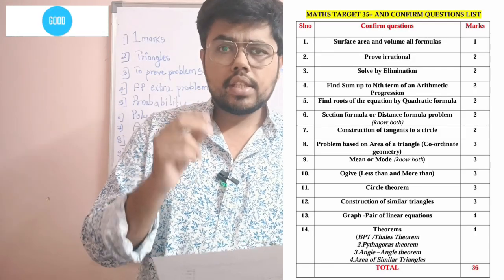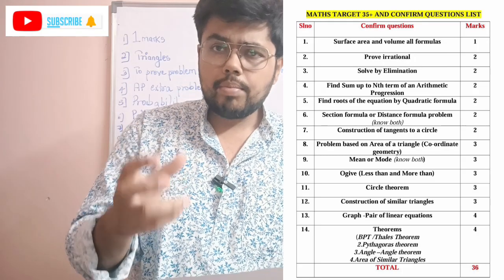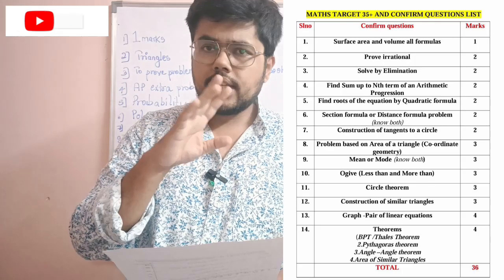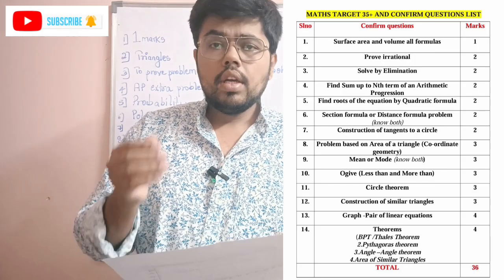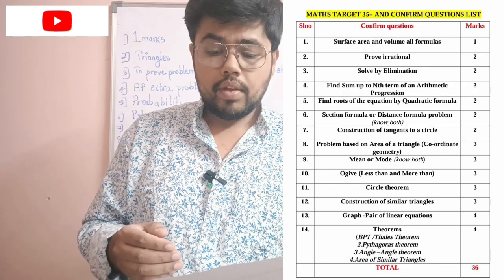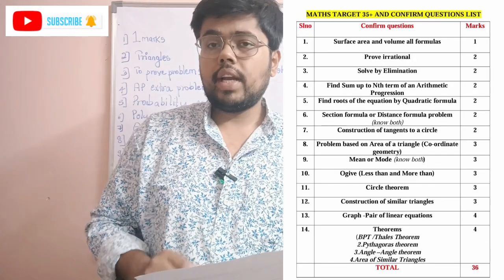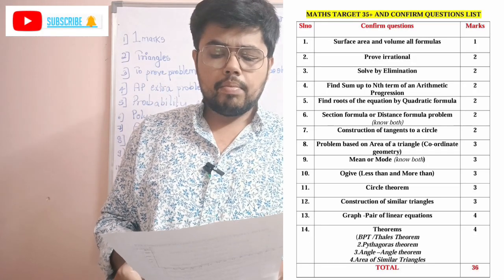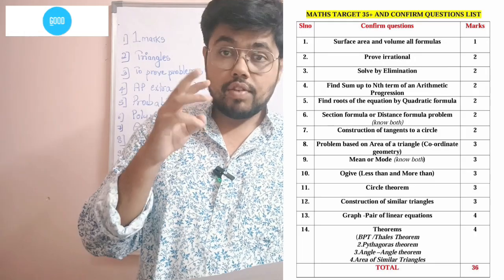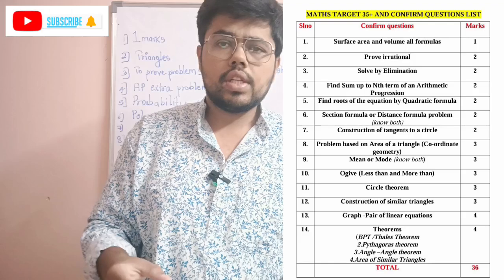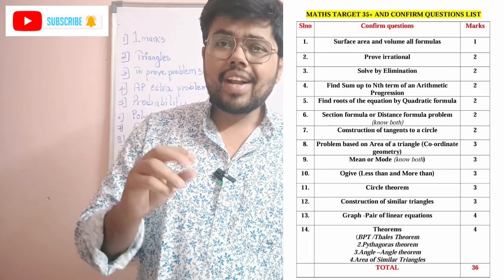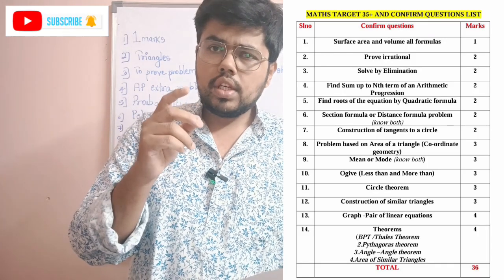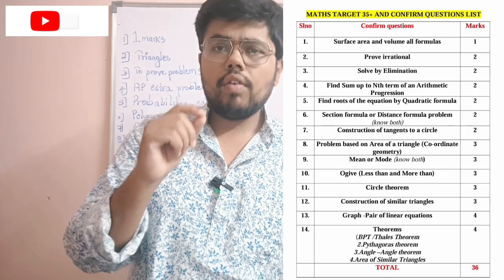Next, quadratic equation — two marks by solving using the quadratic formula. That two-mark question is definite. Next, section formula and distance formula — both can be asked for two marks directly. Coming to coordinate geometry, I feel three marks will be a direct question on area of triangle. For three marks, you will have an or-question where one option will be to find the area of triangle directly using three coordinates.